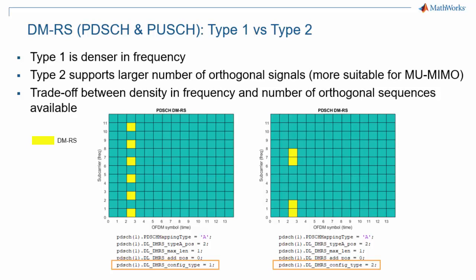This slide shows the DMRS pattern in frequency for type 1 and type 2. Type 1 corresponds to every other resource element in frequency being occupied by a DMRS symbol. Type 2 shows two consecutive resource elements occupied by DMRS symbols out of each group of six resource elements. Therefore, type 1 has a denser occupancy at 50% of the resource elements versus one-third for type 2. On the other hand, you can only have two combs of type 1 DMRS, whereas there can be three different sets of type 2 DMRS. Type 2 supports a larger number of orthogonal signals, which is more suitable for multi-user MIMO. These two types correspond to a trade-off between density in frequency and the number of orthogonal DMRS sequences supported.